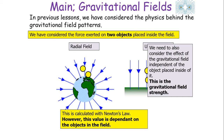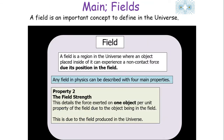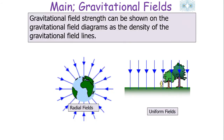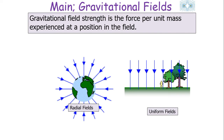With this idea, we can look at the concept of gravitational field strength. Gravitational field strength, or any field strength, is the force exerted on one object per unit property of the field due to the object being in the field. For example, gravitational field strength is the force per unit mass experienced by an object inside a gravitational field. It can be shown on gravitational field diagrams as the density of gravitational field lines.